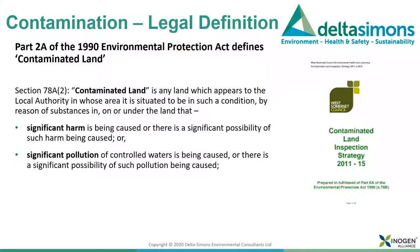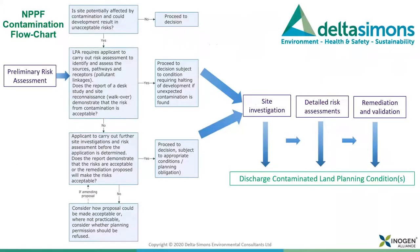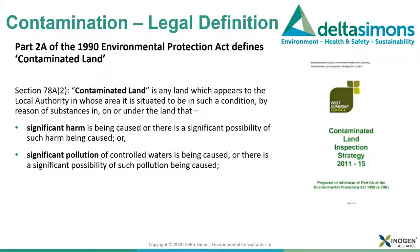The legal definition of contaminated land requires you to positively prove that significant harm is being caused or there is a possibility of significant harm being caused. It's not enough that there's slight contamination that might be a problem — the evidence must be far more definitive. In effect, a site is innocent until the scientific evidence proves it guilty, and the burden of proof required is quite heavy. Not many sites pass that threshold.